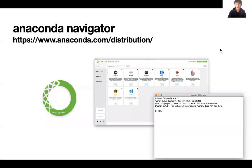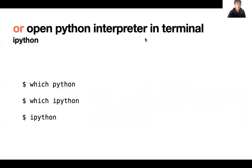When you install Anaconda, it has Anaconda Navigator where you have Jupyter Notebook, which we will use next time, and it also has a Python console which you will use today. For today, it will be enough just to have a Python interpreter in terminal. Open your terminal and try typing 'which python' or 'which ipython' and go into IPython if you have it. IPython is the same as Python but has more functionalities like being able to use 'ls', 'cd', and colors.